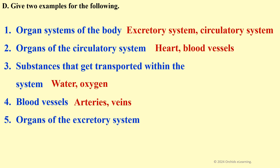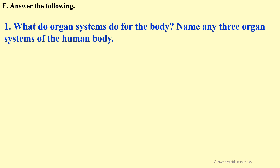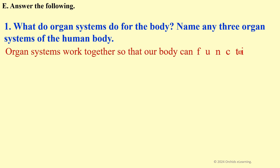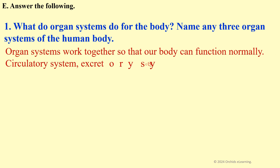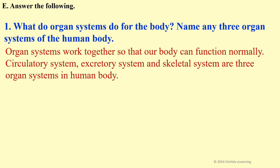Organs of the excretory system: kidney and urinary bladder. Answer the following: what do organ systems do for the body? Name any three organ systems of the human body. Organ systems work together so that our body can function normally. The circulatory system, excretory system, and skeletal system are three organ systems in the human body.